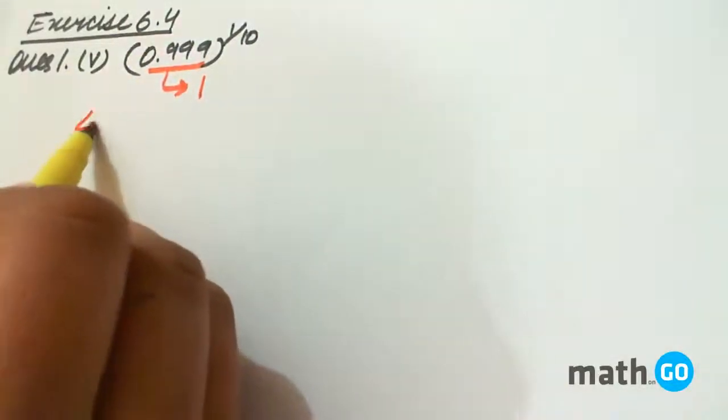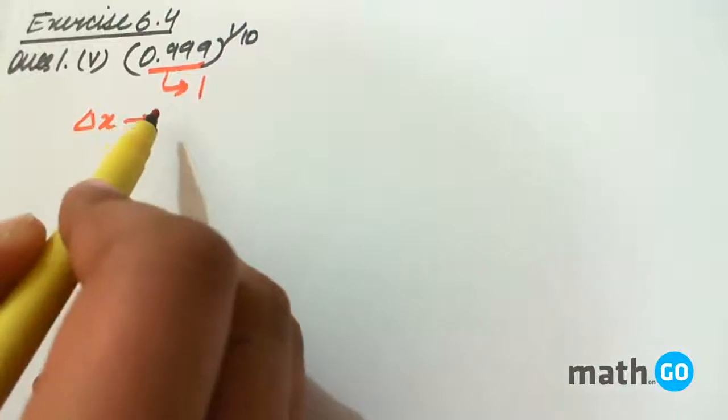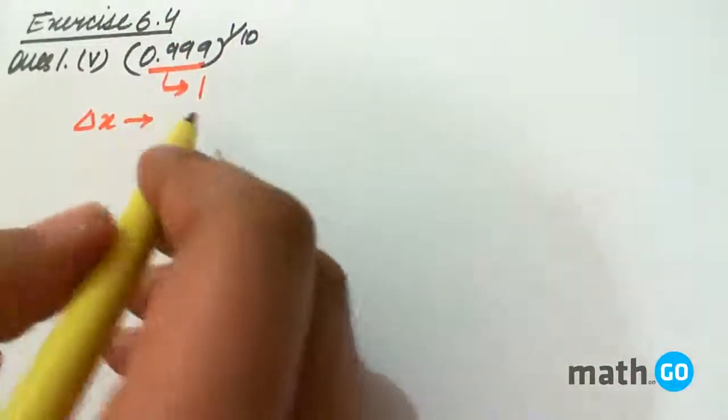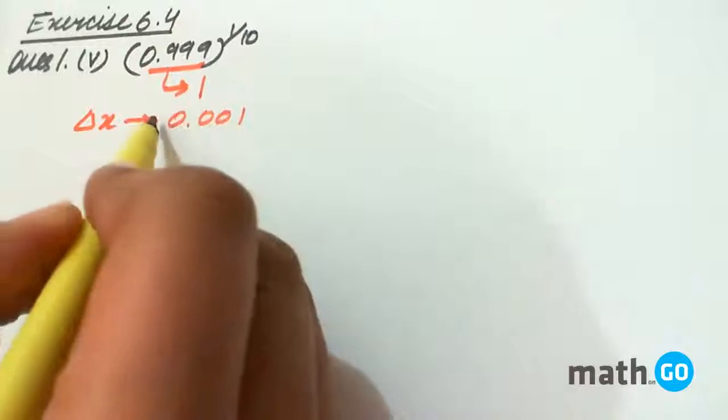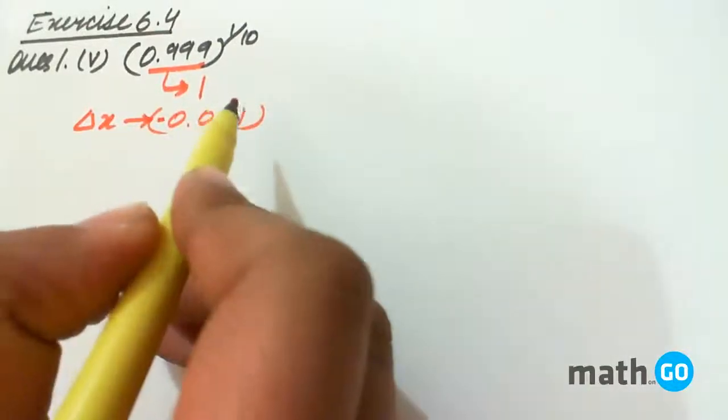But this is the value here, this means an error has been introduced, a change. A decrease has been done of 0.001 decrease, therefore it is minus.